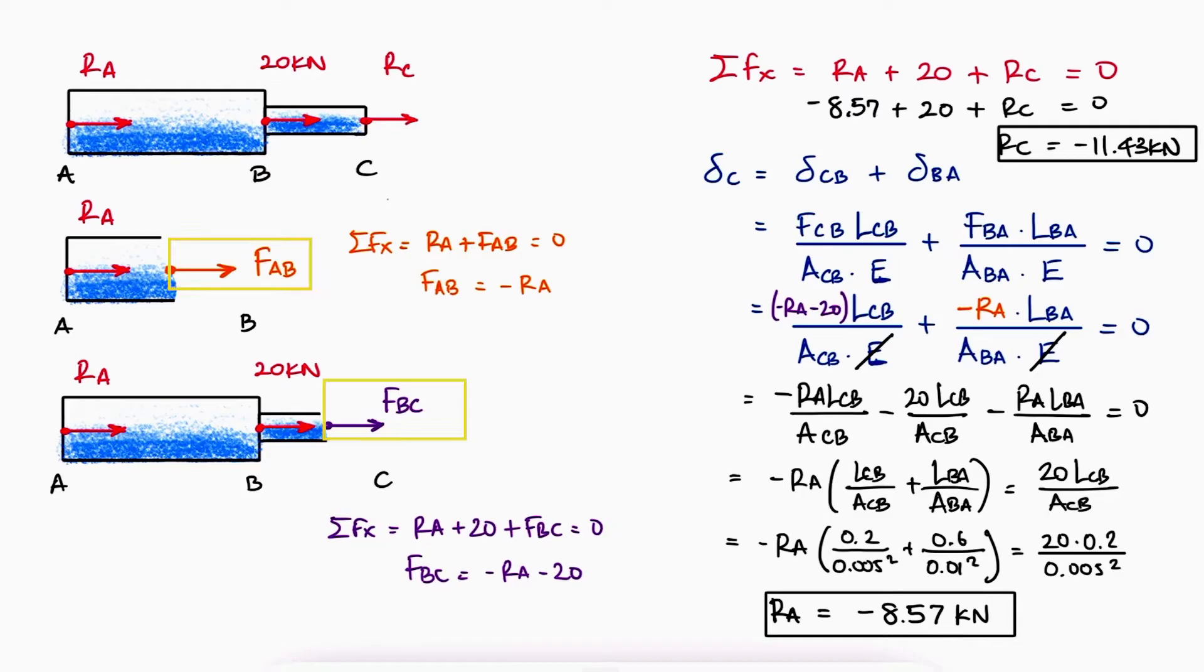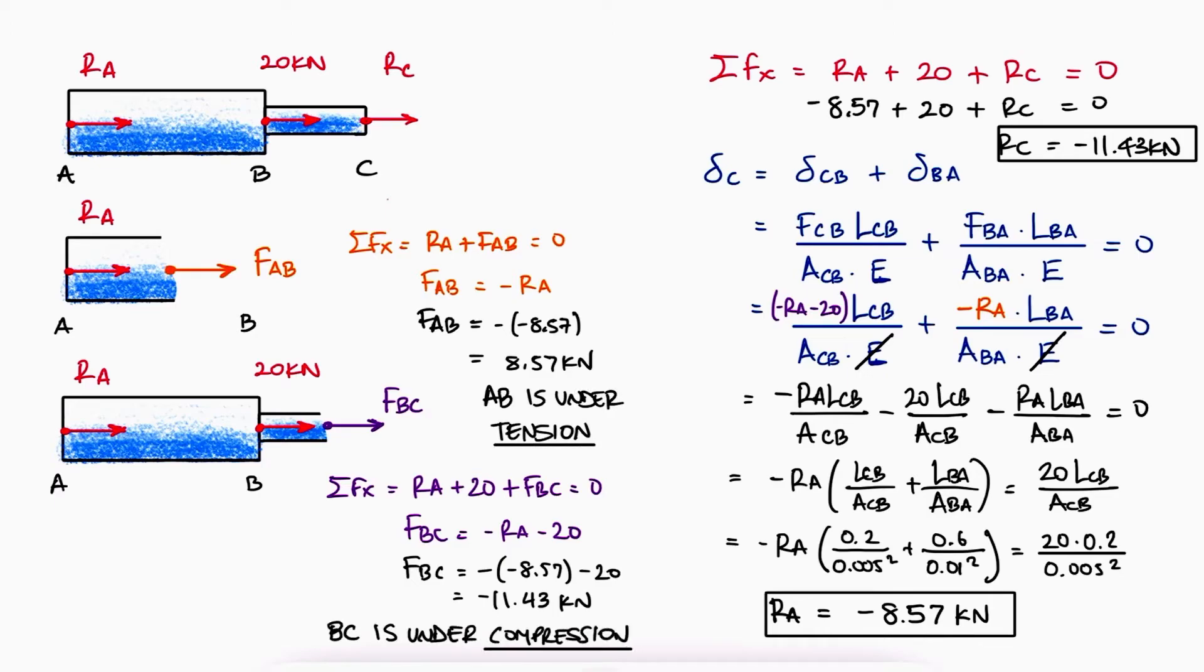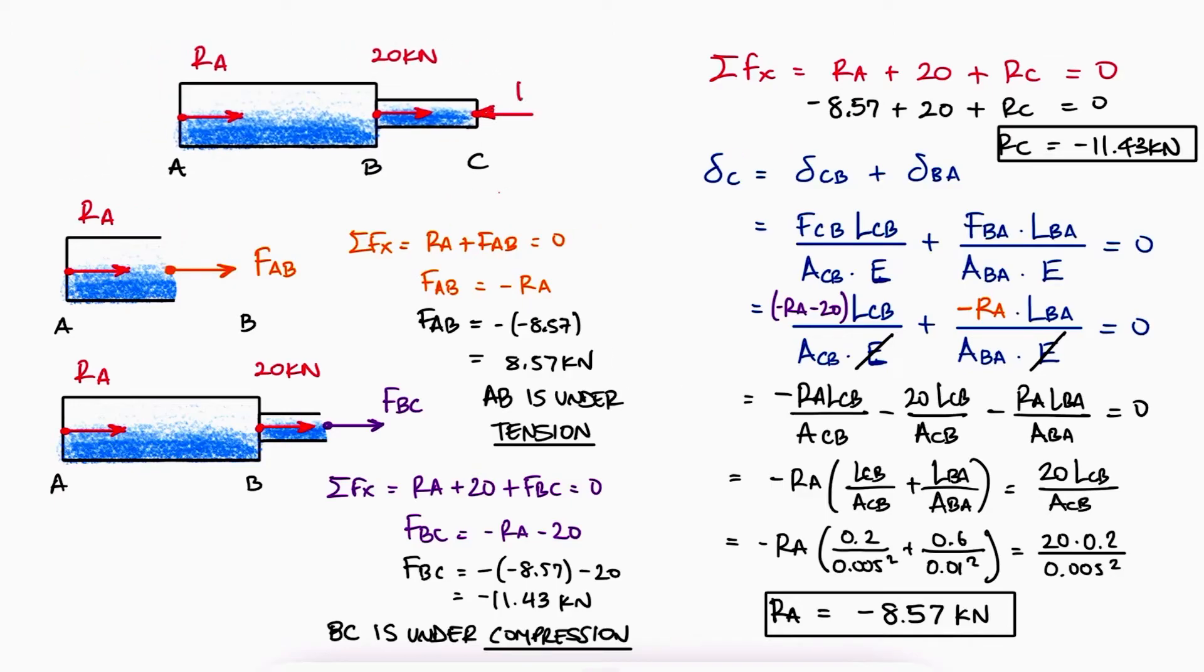The same happens with internal loads. We assume they are tensile, so if we get positive values, they are indeed tensile, and for a negative value, they are compressive, which follows the general convention for tension and compression. This is apparently clear when we substitute the actual values of the reaction forces in the free body diagram. AB is under tension and BC is under compression.